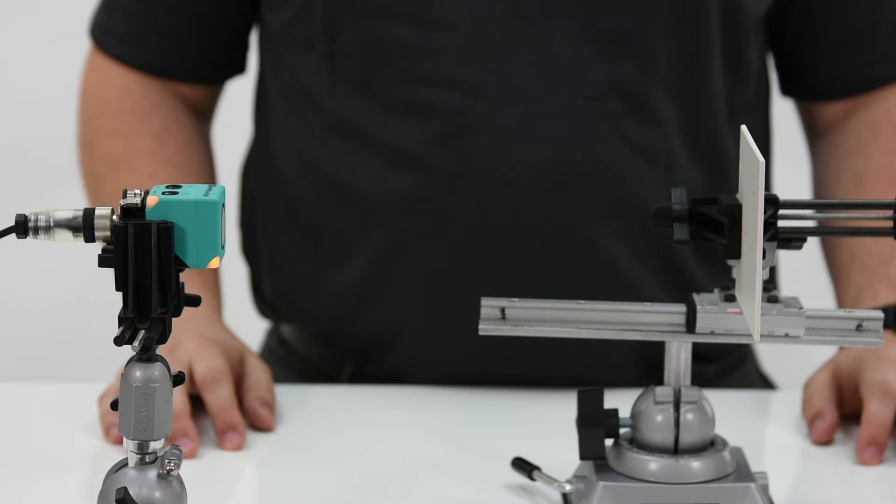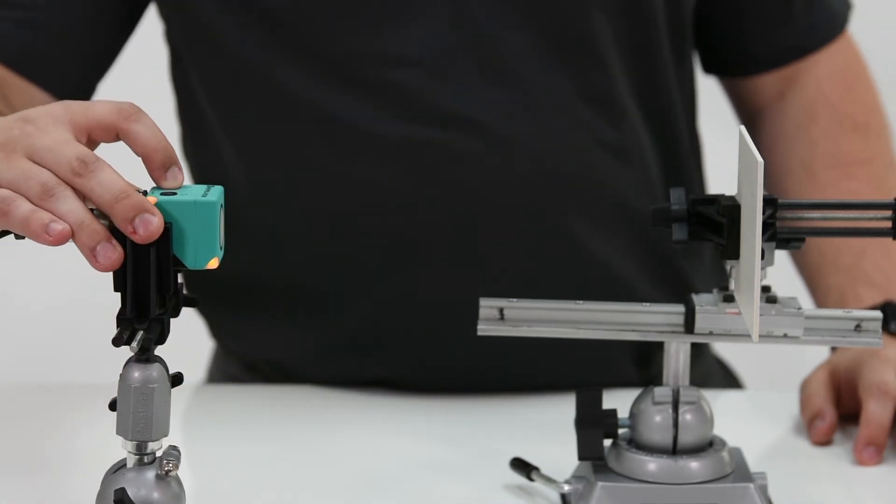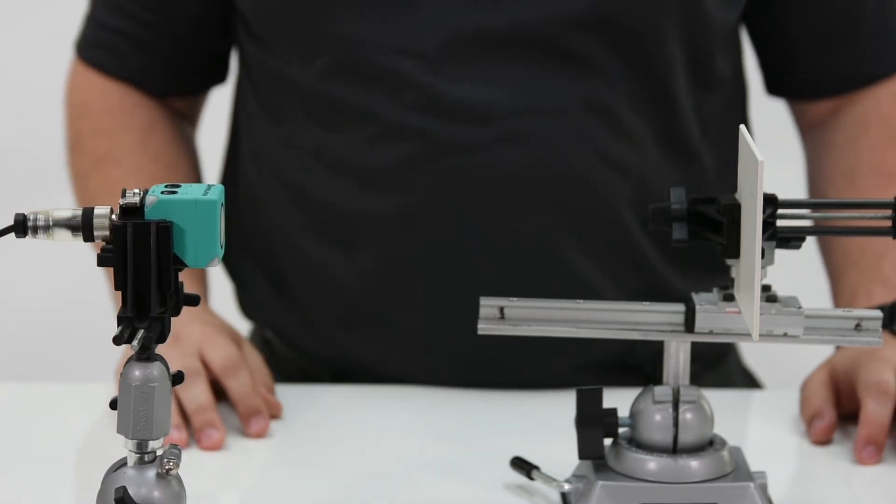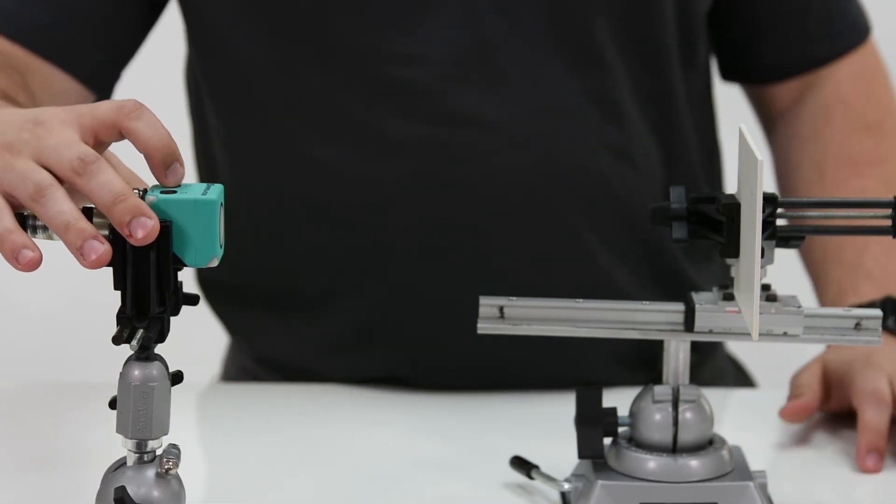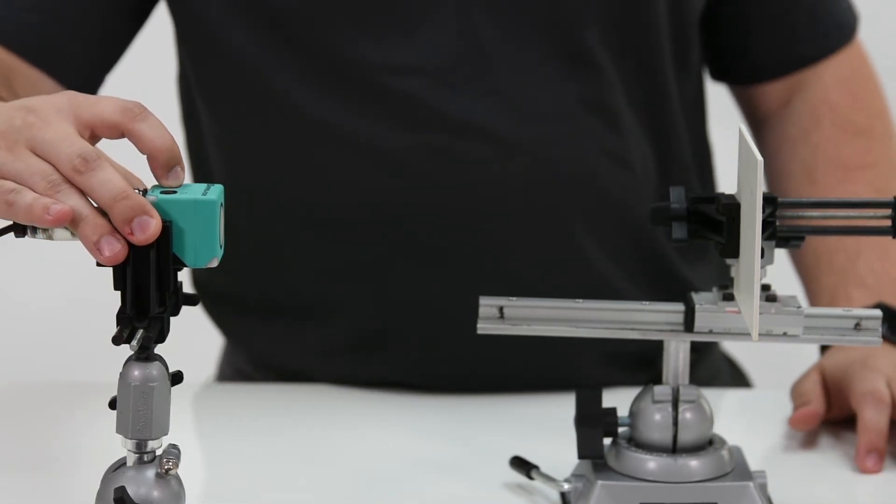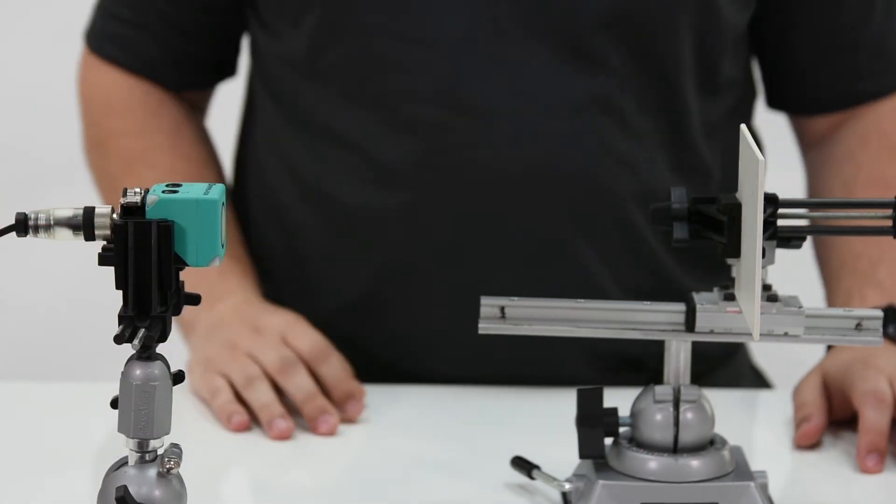So now we're going to set the far switch point. Hold T1 for two seconds. The lights will flash again. Hold it again once you set your target to the far switch point for two seconds. You'll see the lights flash.